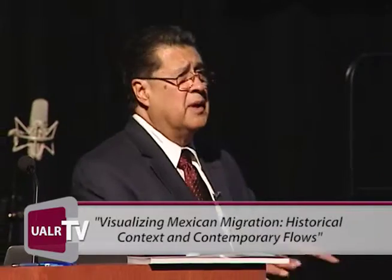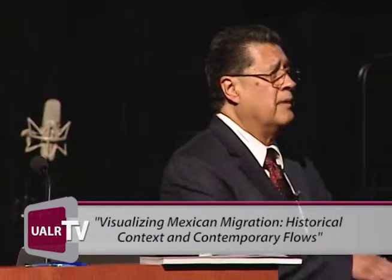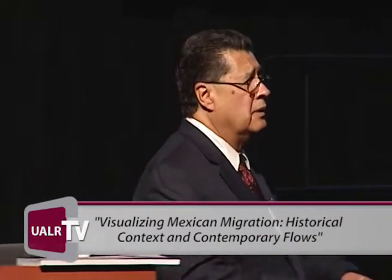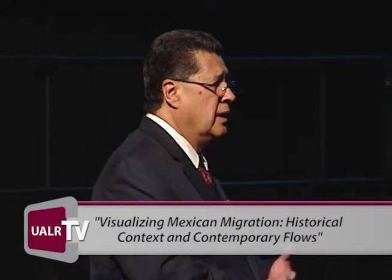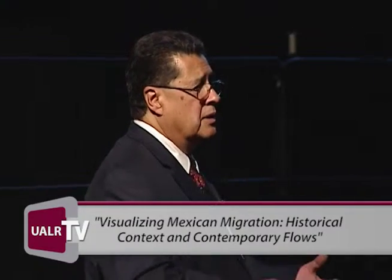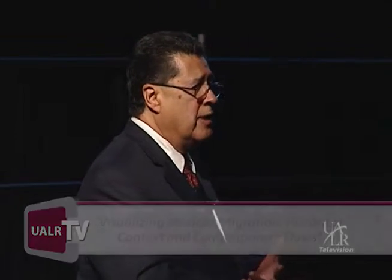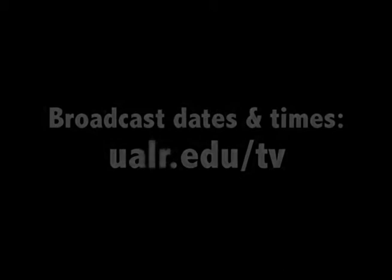So you have a multiplicity of migrant flows now: legal immigration, illegal migration, contract labor migration, temporary labor migration, border commuter migration. The whole system becomes more complex.